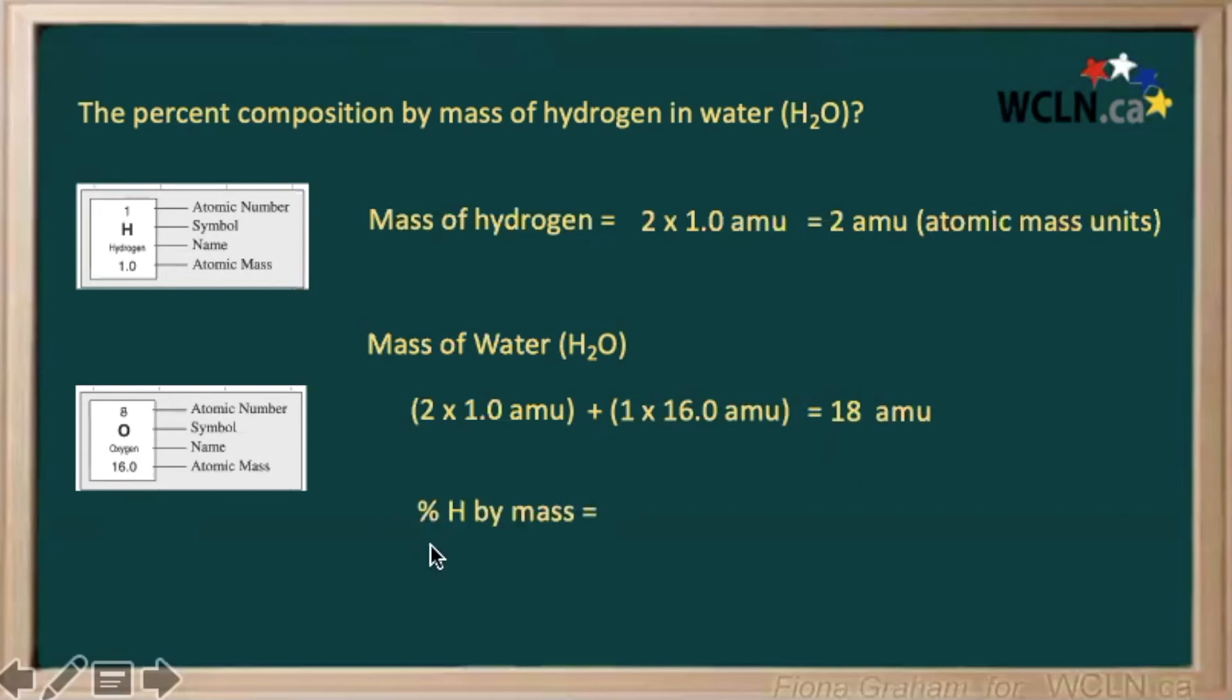To calculate our percentage composition by mass of hydrogen in the water, we just create a ratio comparing the mass of all our hydrogen to the mass of our water, which gives us 0.111, multiplying that by 100 to give us a percentage is about 11.1%. Our hydrogen in our water accounts for only 11% of the overall mass.